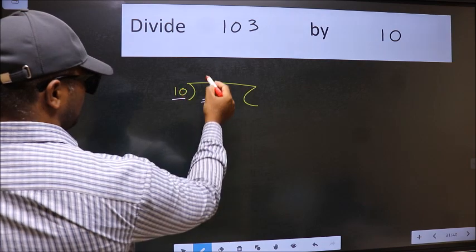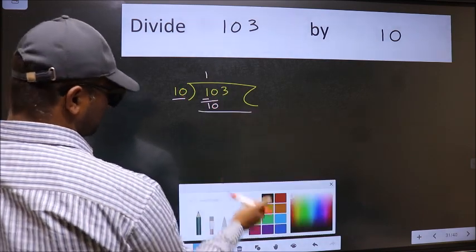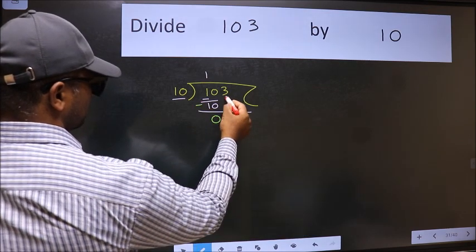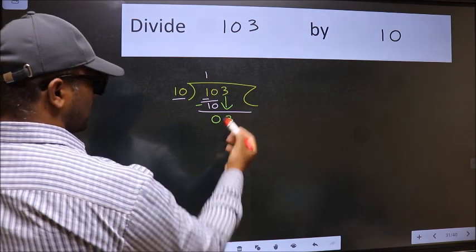When do we get 10 in 10 table? 10 once is 10. Now we should subtract. We get 0. After this, bring down the beside number. So 3 down.